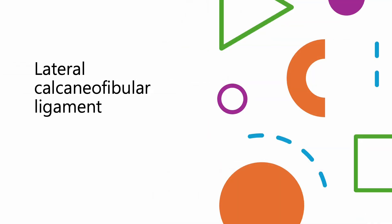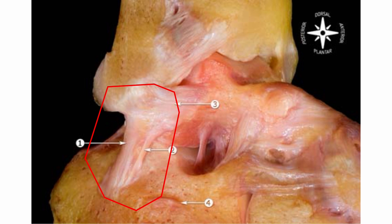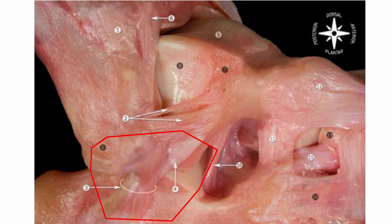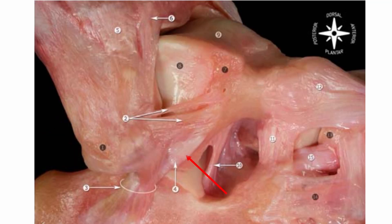Lateral calcaneofibular ligament. It extends from the lateral malleolus downwards to the lateral surface of the calcaneus. Unlike other ligaments in the ankle, the CFL is oriented more vertically, creating a distinct angle with the talus and the subtalar joint. This positioning allows the CFL to stabilize the ankle joint and subtalar joint, providing multidirectional stability. When you shift your focus from the anterior talofibular ligament to the lateral calcaneofibular ligament while ankle ultrasound scanning, you may notice that these two ligaments are not distinctly separated at the distal tip of the lateral malleolus. This observation could be attributed to two factors: firstly, the extension of the ATFL towards the inferior region, and secondly, the presence of the underlying talocalcaneal ligament. Therefore, you might observe a continuous thick capsular structure when you pivot your ultrasound probe at the lateral malleolus.